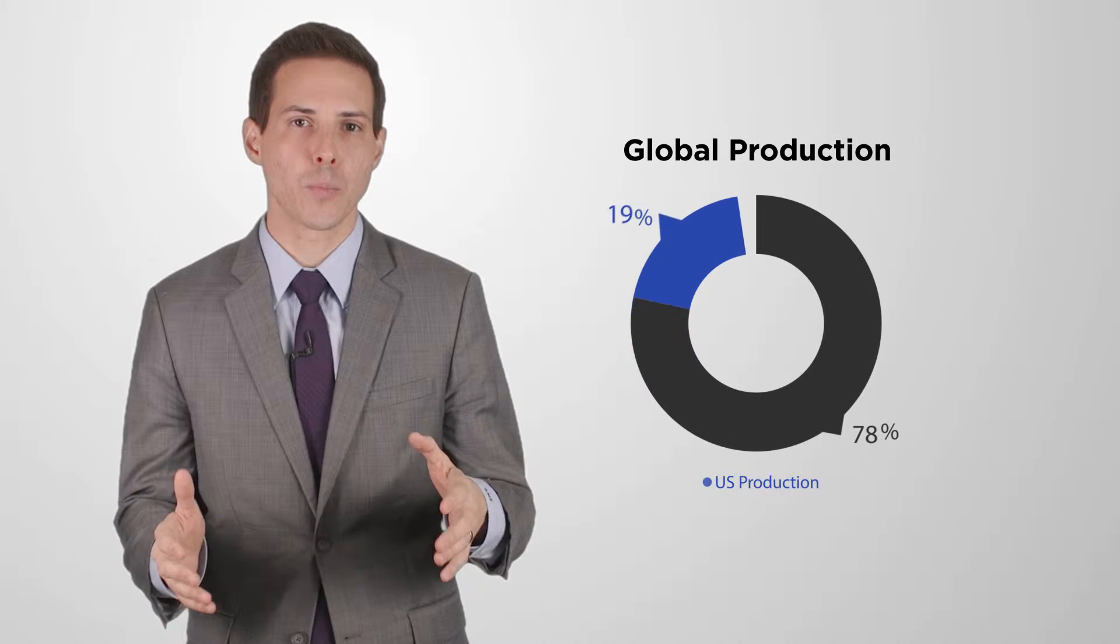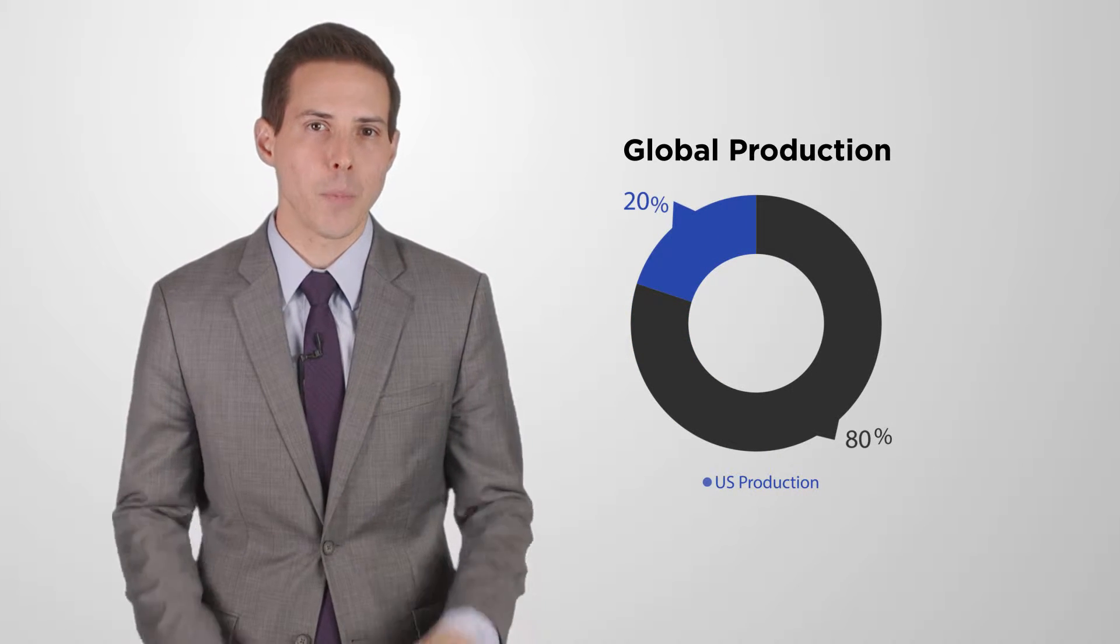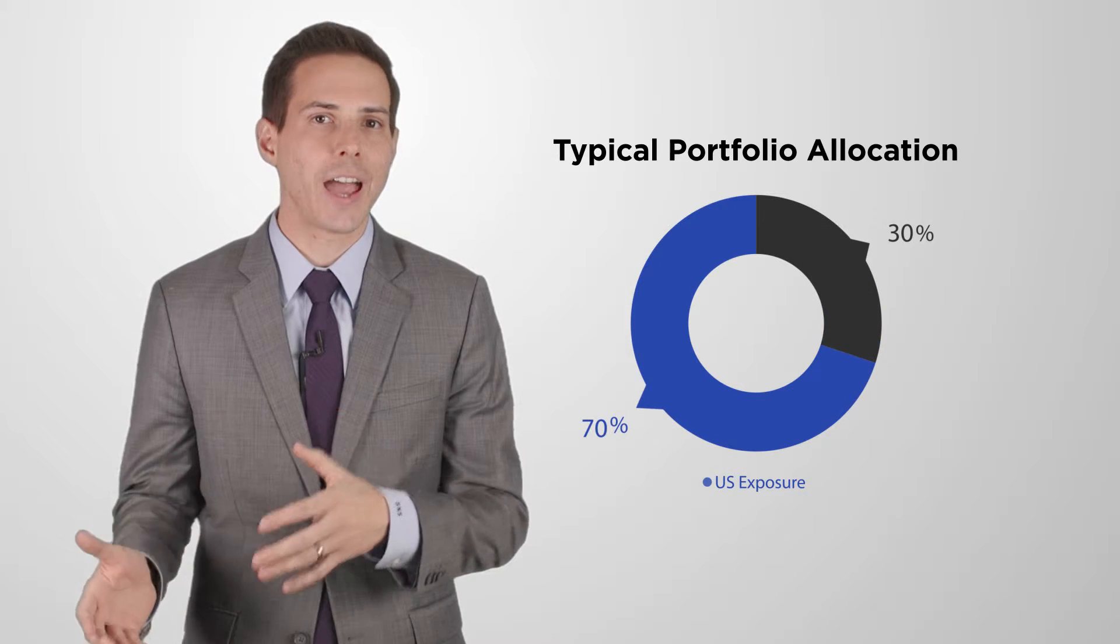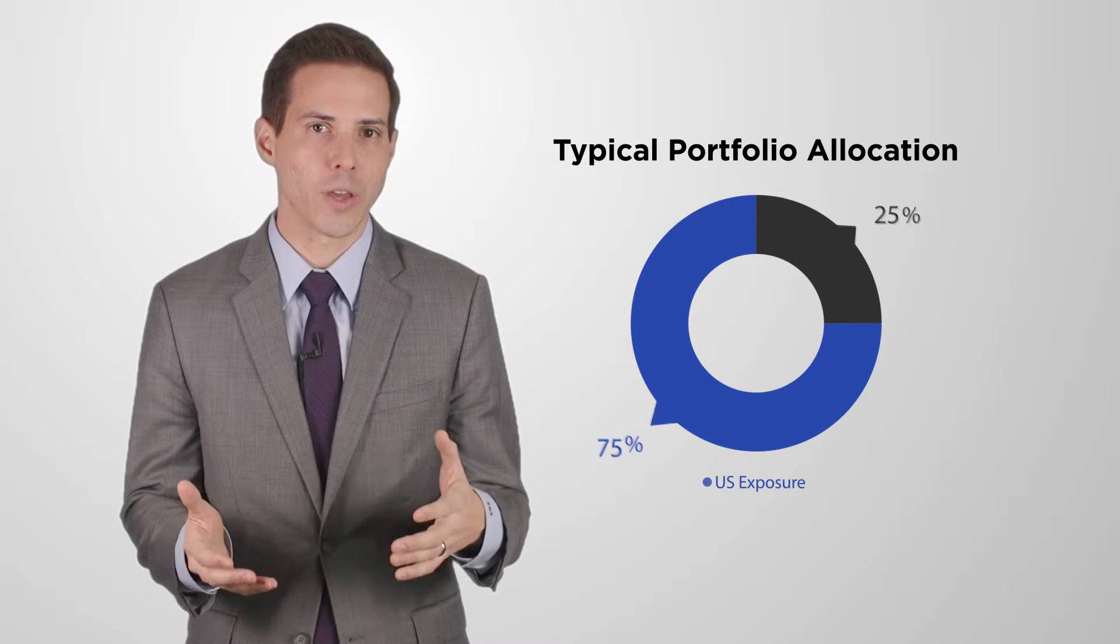For example, have you ever examined your portfolio and wondered how your advisor determined your allocation to international stocks? Today, the United States makes up roughly 20% of global production, yet most portfolios allot a disproportionately large allocation, denying their assets proper protection from U.S. market crashes.